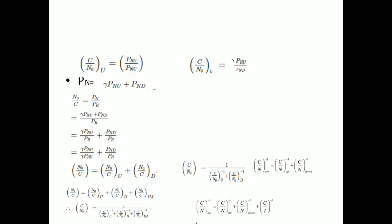For calculation purposes, C/N of the uplink is PRU by PNU, and C/N₀ of the downlink is gamma times PRU by PND. The total noise is gamma times PNU plus PND. For ease of derivation, we will represent N₀/C — that is, the noise to signal ratio — as the total noise PN divided by the total power received PR.